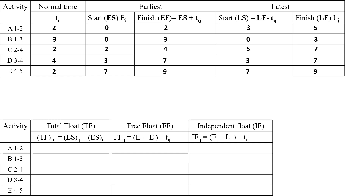Total float is defined as Ls minus Es. For activity A: 3 minus 0 equals 3. For activity B: 0 minus 0 equals 0. For activity C: 5 minus 2 equals 3 — wait, that becomes 3. Actually for activity C it is 5 minus 2 equals 0 — as noted. For activity D: 3 minus 3 equals 0. For activity E: 7 minus 7 equals 0.